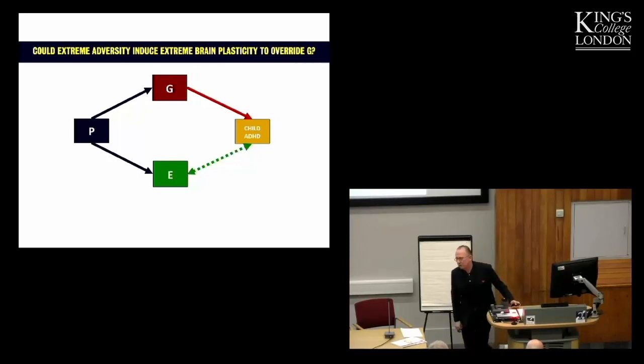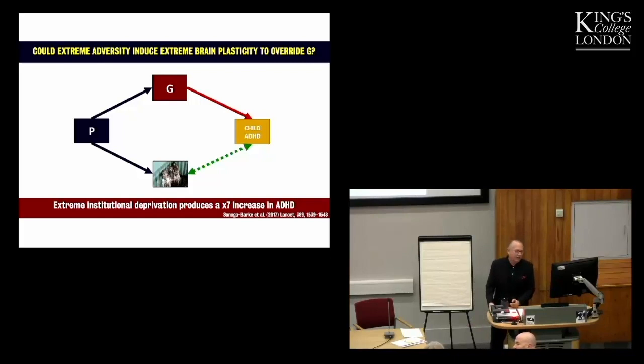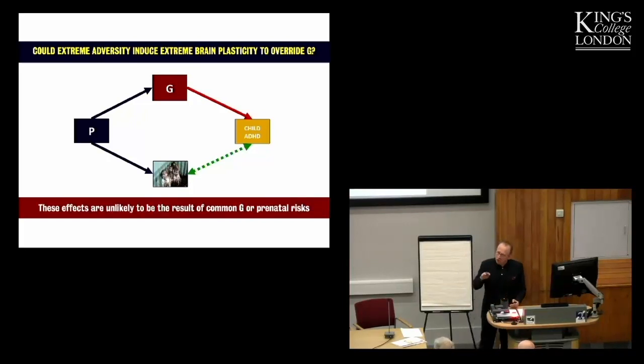What about extreme environments? Could they, could extreme adversity, override genetic effects with direct effects on brain plasticity to create ADHD or cause ADHD? And so, our study, the English Romanian Adoptee Study, that Mike Rutter set up, of course, has looked at this, and we find a seven-fold increase in ADHD in adults who are exposed to deprivation. And it's very unlikely that those effects are due to background genetic or pre- and perinatal risk in those children.